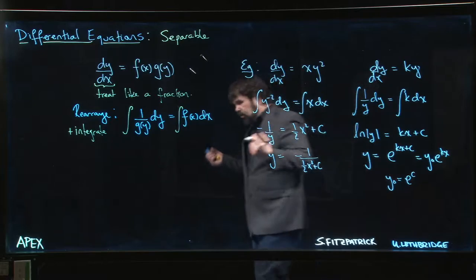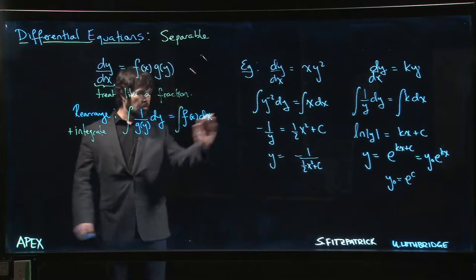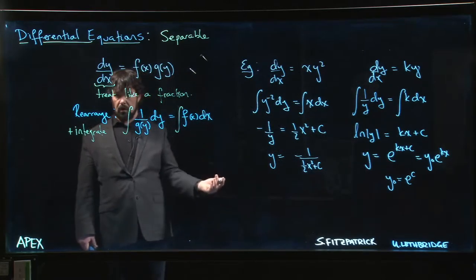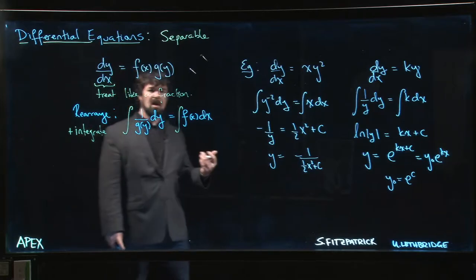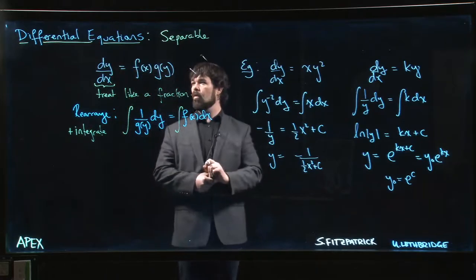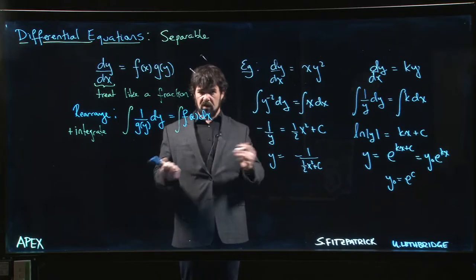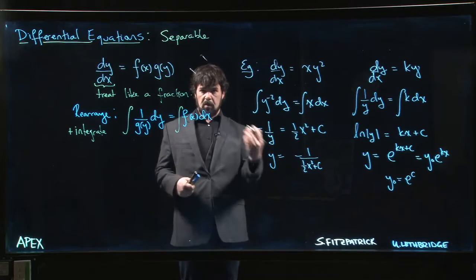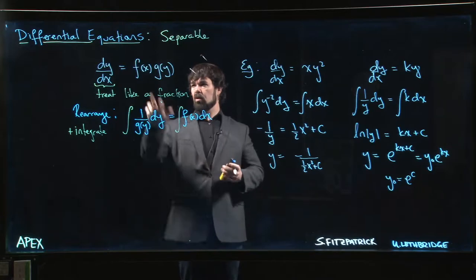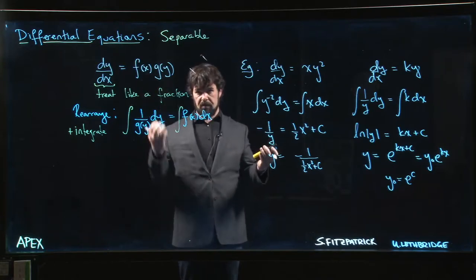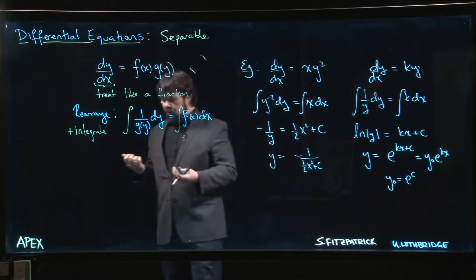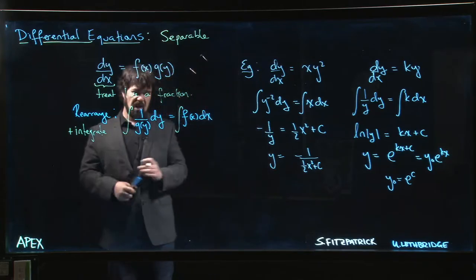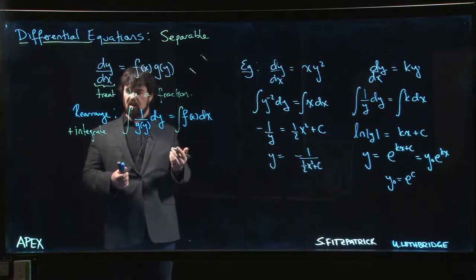So that's pretty much the strategy for every separable equation. We'll look at a number of examples as we work our way through. They're all going to follow more or less the same theme. Typically, what you're looking for when trying to decide whether an equation is separable, whether this approach will work, is this kind of product pattern: function of x multiplied by a function of y. Generally, if you see addition or subtraction, probably the equation is not separable.